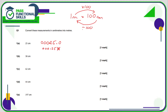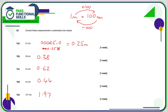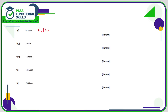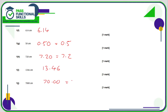The decimal point will now sit here, so the answer is 0.250. The zero on the end isn't doing anything, and those first two zeros we don't need either, so it's just 0.25 meters. This sets a nice pattern: 0.38, 0.62, 0.44 — we need to create two decimal places — 1.97, 6.14, 0.50 (known as 0.5), 7.20 (known as 7.2), 13.46, 70.00 (simply 70).